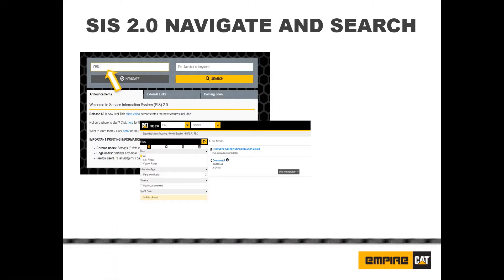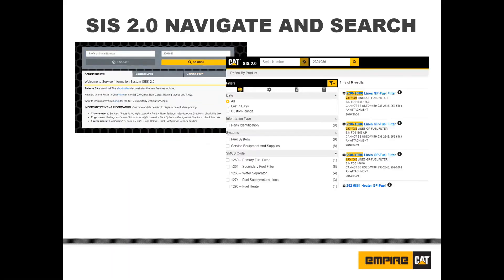You can perform a search for all available information for a specific product by entering a prefix or serial number and clicking search. To narrow your search results from the start, you can also add a part number or keyword. Sys 2.0 also allows users to perform searches by entering a part number or keyword without a prefix or serial number and clicking search.